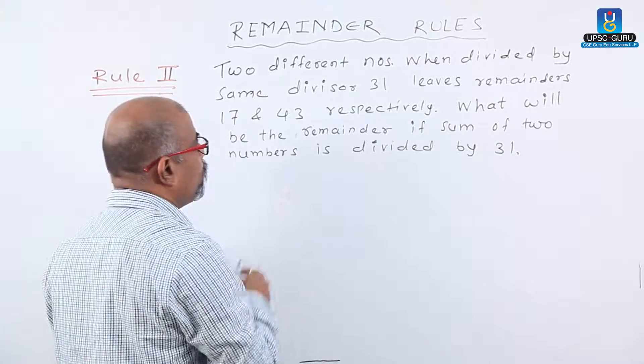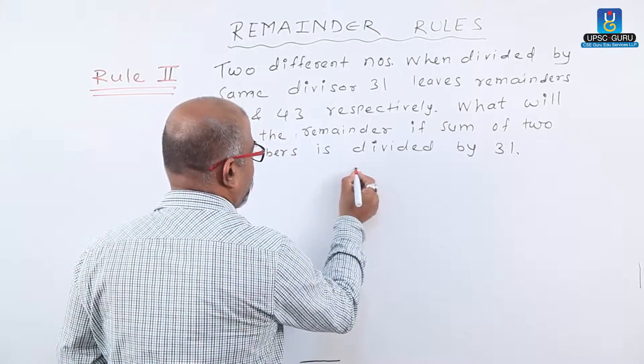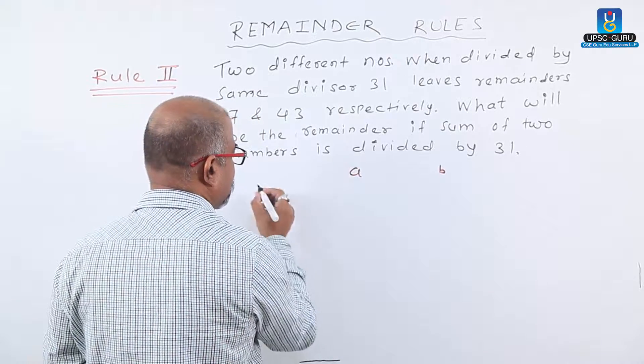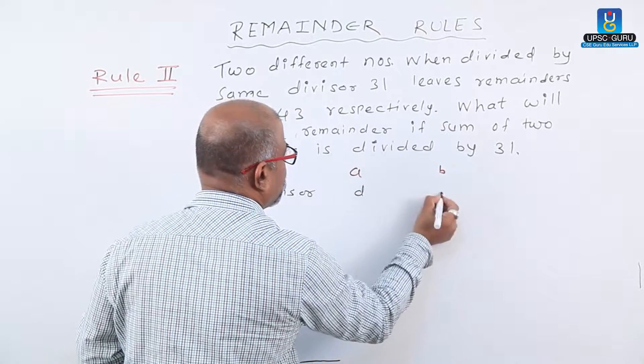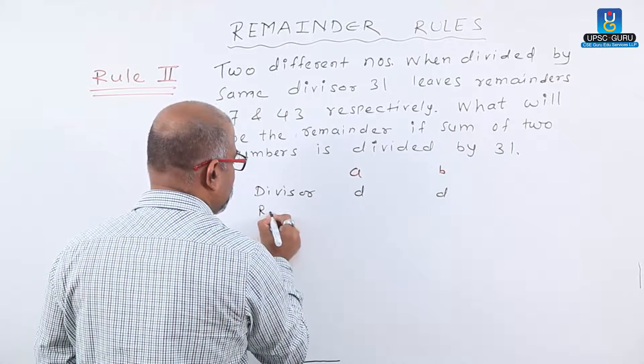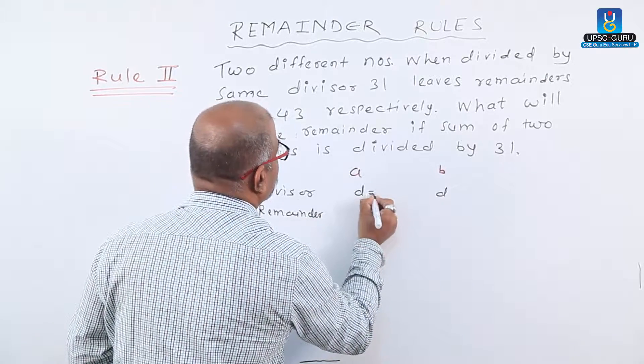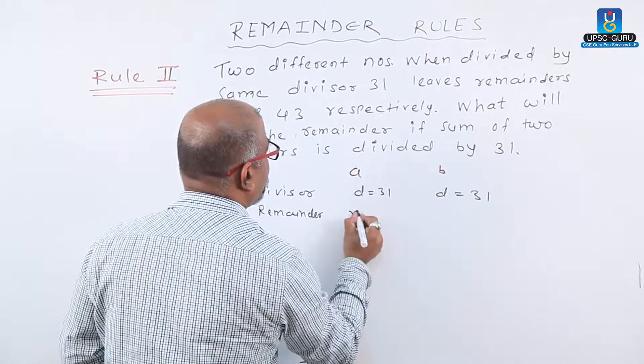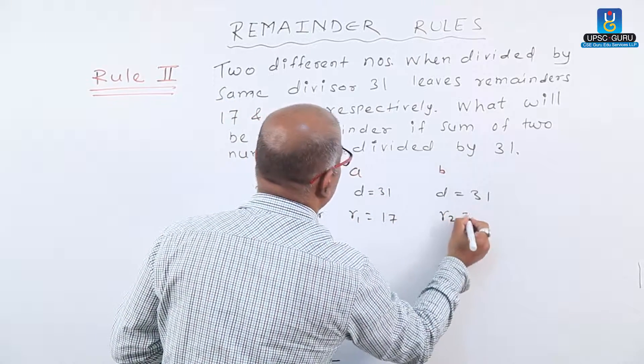When two different numbers A and B are divided by the same divisor D, they give us remainders. Here D is 31, remainder R1 is 17, and R2 is 43.